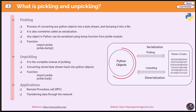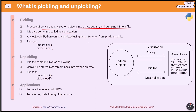Suppose you have some objects. As you know, in Python, everything is an object. So it can be anything like a dictionary, list, or any other object. And you want to store that object directly to some files. This can be done with the pickle module, and the process is called pickling. This is also sometimes called serialization. Here, objects are converted into a byte stream and dumped into some file. In our case, our dictionary object is converted into a byte stream and stored into a file somewhere on the drive.